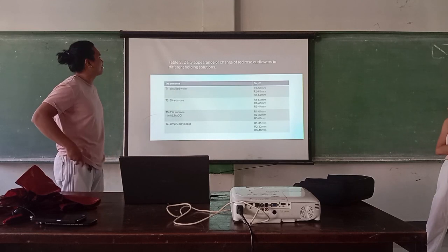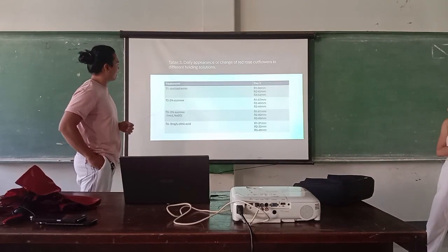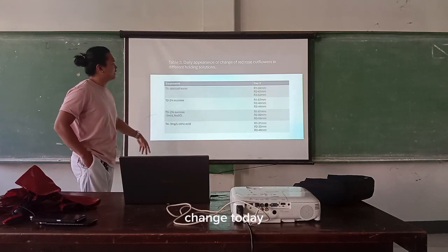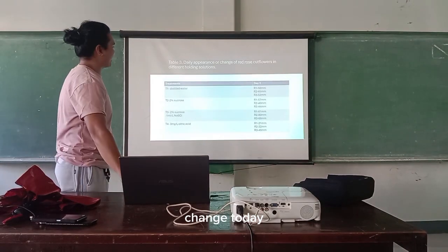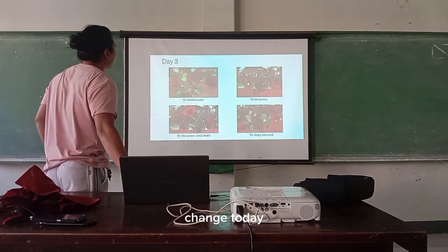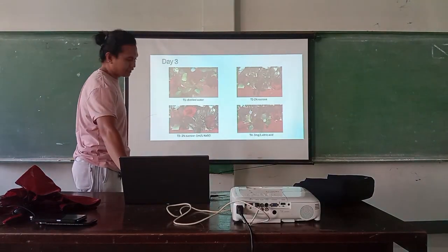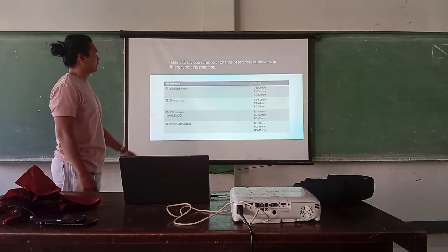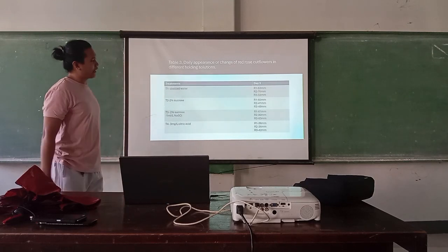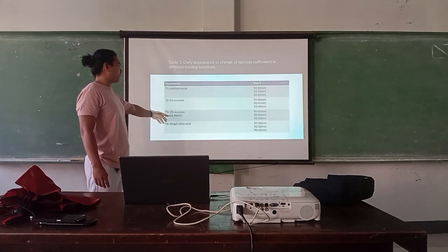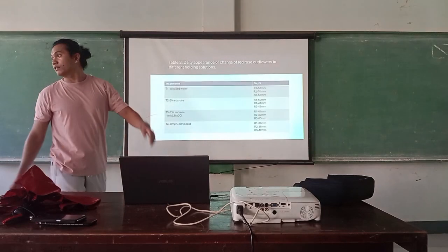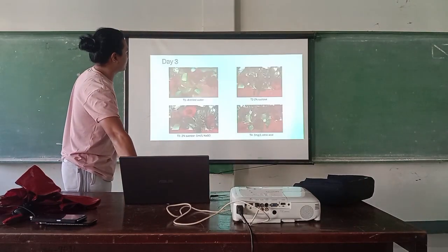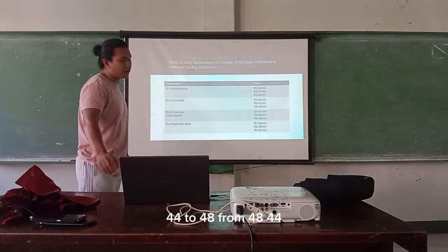Daily appearance and change of red rose cut flowers in different holding solutions. In Treatment 1, R1 on Day 2 was 15 mm. By Day 3, noticeable changes were observed. In the distilled water treatment, R1 was 55 mm — the flower was quite wide. With 2% sucrose, there was only a slight opening. The flowers with bleach showed changes from 48 mm to 44 mm.